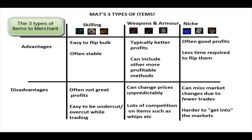I've got advantages and disadvantages listed for each. Skilling items are good because they're easy to flip in bulk — for example, 10,000 maple logs — and they're often stable in price, which means they're quite hard to lose money on. The disadvantage is they often don't offer the best profits, and it's easy to be undercut or overcut while trading, since someone can easily undercut you by just one GP.